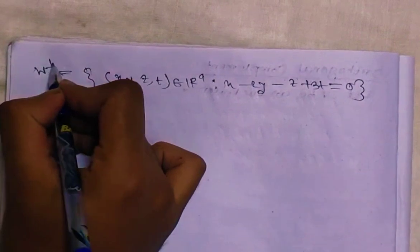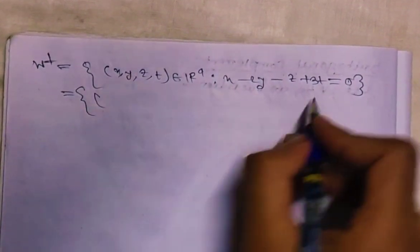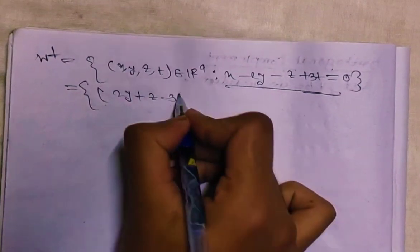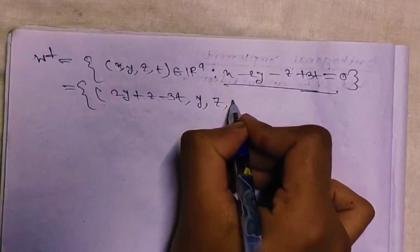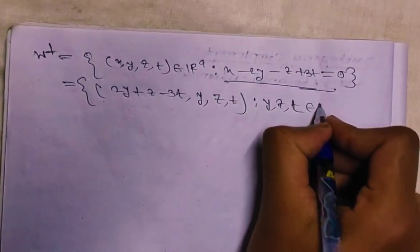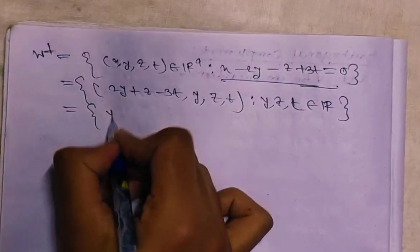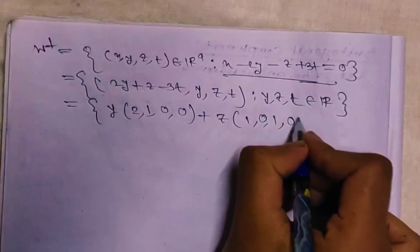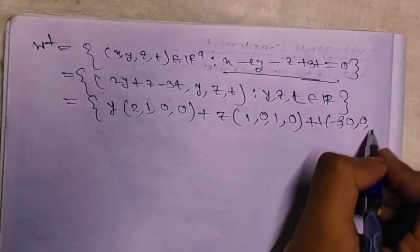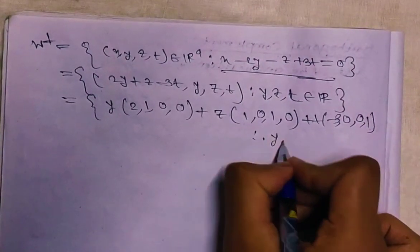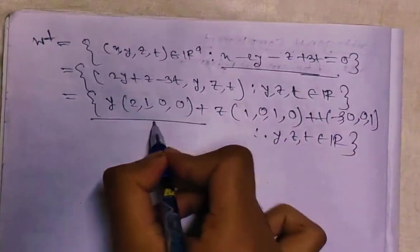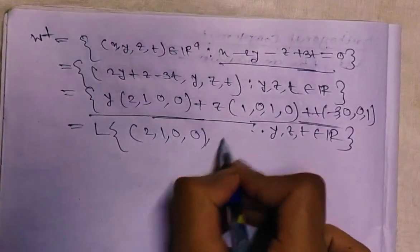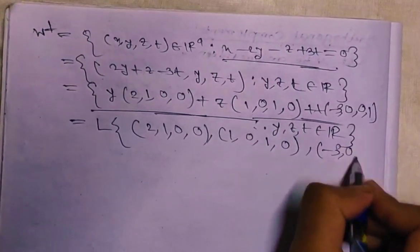From x - 2y - z + 3t = 0, the solution set equals y·(2, 1, 0, 0) + z·(1, 0, 1, 0) + t·(-3, 0, 0, 1) for y, z, t in R. Therefore W⊥ equals the linear span of (2, 1, 0, 0), (1, 0, 1, 0), and (-3, 0, 0, 1).